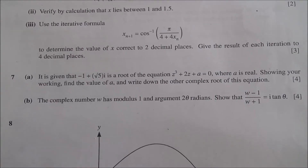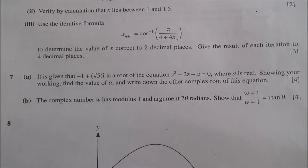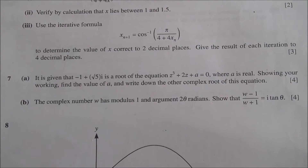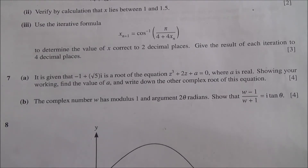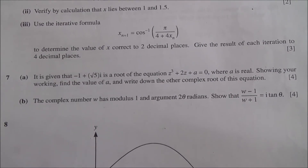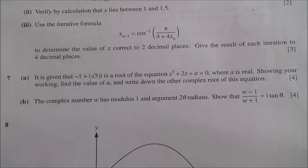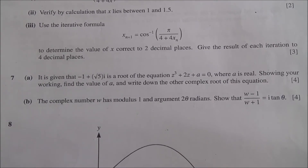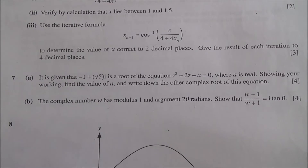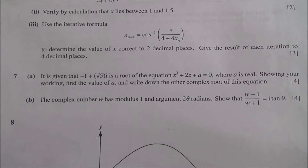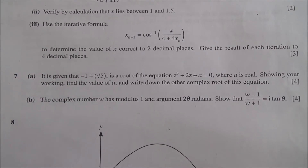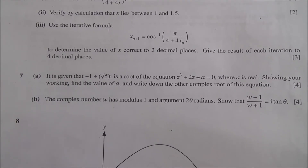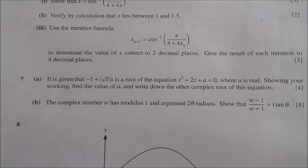Hi, question number 7, taken from June 2014 A-level Maths HSE paper 3. It is given that minus 1 plus root of 5i is a root of the equation z cubed plus 2z plus a equals 0, where a is real. Showing your working, find the value of a and write down the other complex root of this equation.